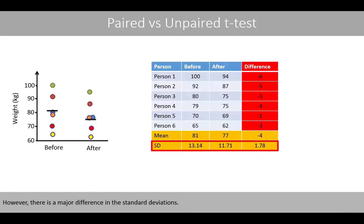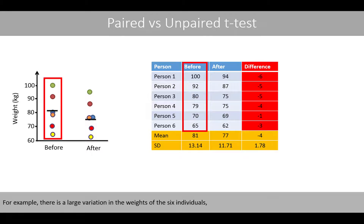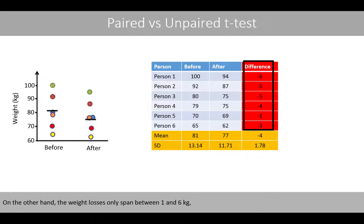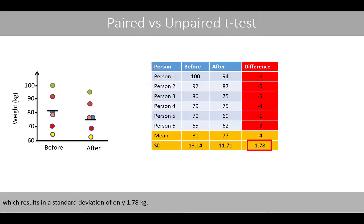However, there is a major difference in the standard deviations. There is a large variation in the weights of the six individuals, which results in a standard deviation of about 13 kilos. On the other hand, the weight losses only span between 1 and 6 kilos, which results in a standard deviation of only 1.78 kilos.